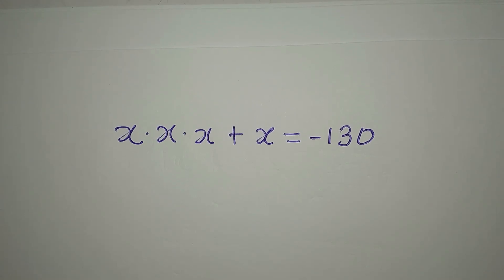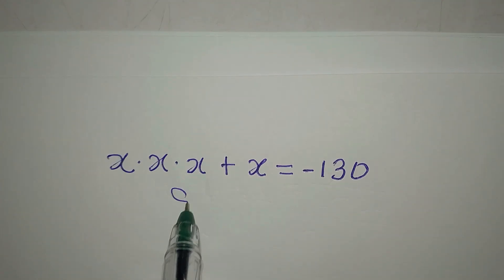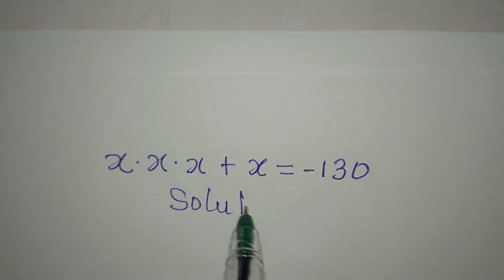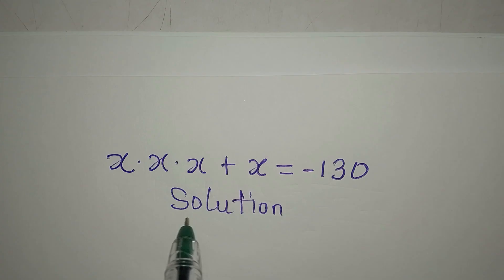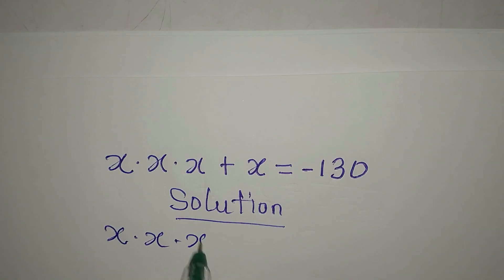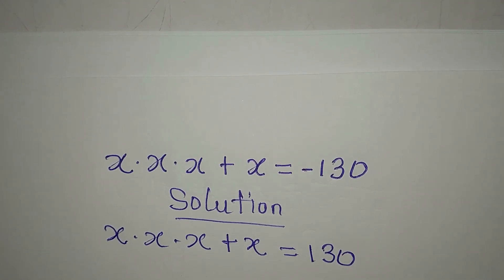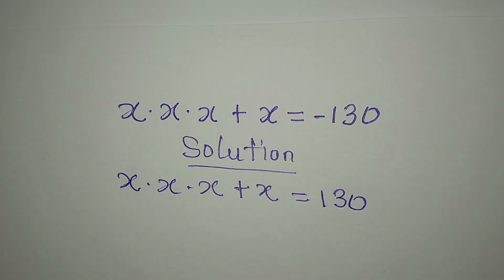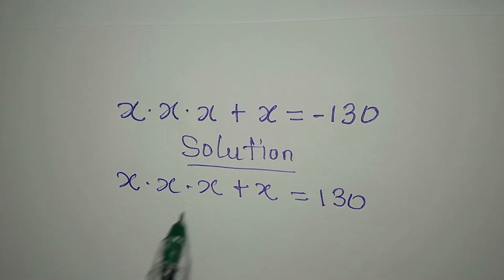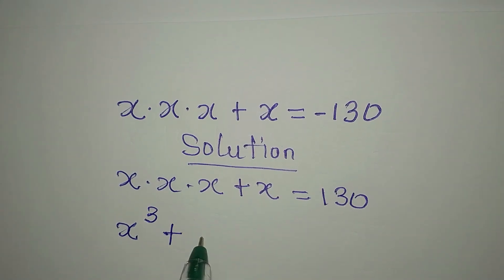Hello everyone, let's provide the solution to this problem: x times x times x plus x equals 130. What do we do first? These times these times these will be x to the power of 3, plus x.